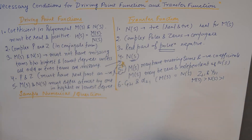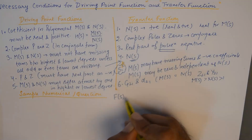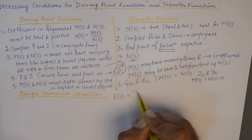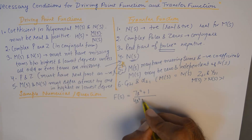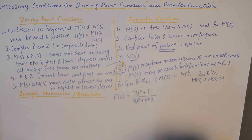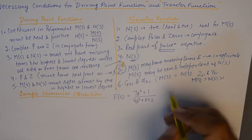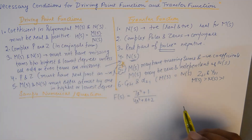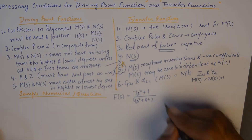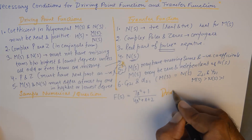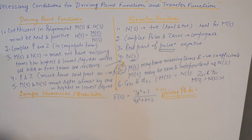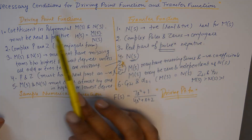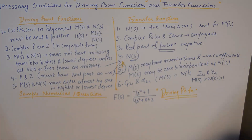Now let's discuss an example. We are given a transfer function F(s) = (7s² + 1) / (4s² + s + 2), and we need to check if this function is suitable as a driving point function. We will check the necessary conditions for driving point functions.